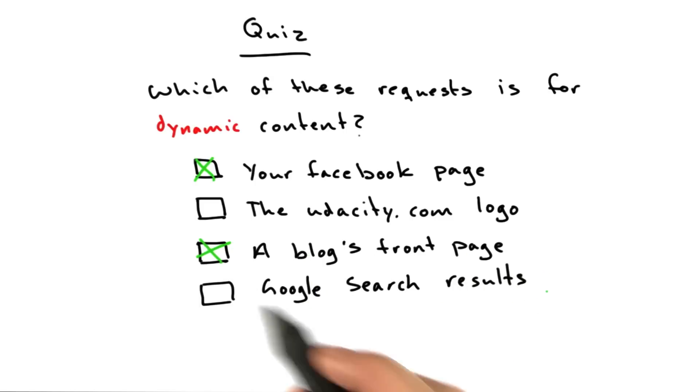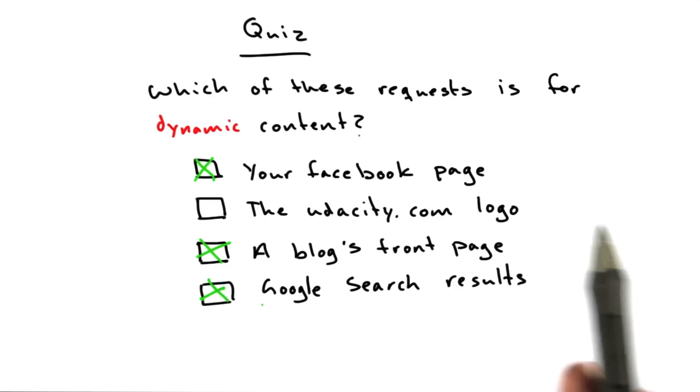And Google search results, definitely dynamic. You run a search, Google in the background does a search on all of their computers, puts together results, and then renders them for you on the fly.